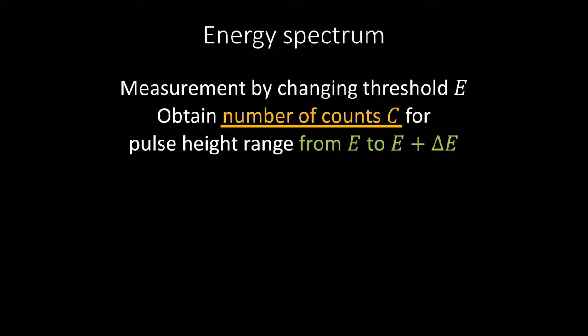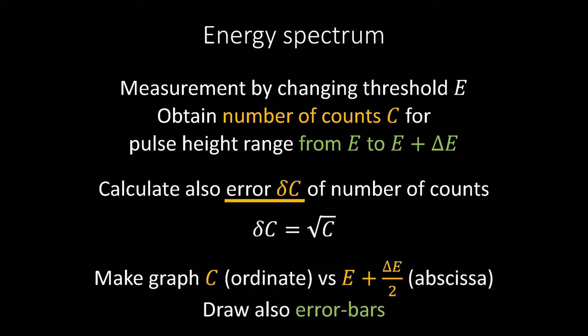We have obtained the number of counts, C, for the range from E to E plus delta E, by measuring while changing the threshold, E. Next, calculate the error, delta C, of the counts. The error, delta C, is the root C. Make a graph with E plus 1 half of delta E on the horizontal axis, and counts, C, on the vertical axis. Also fill in the error bars.